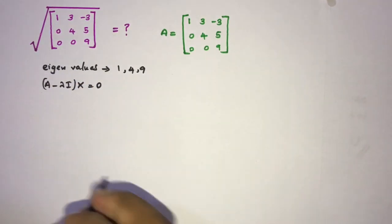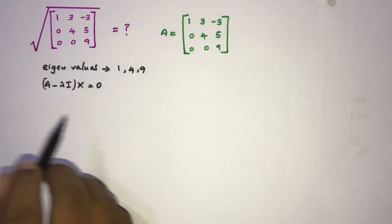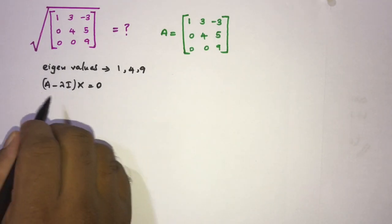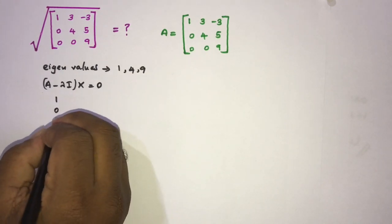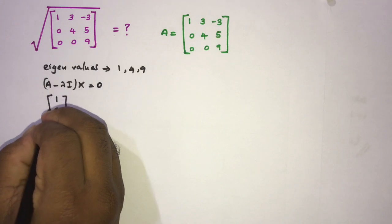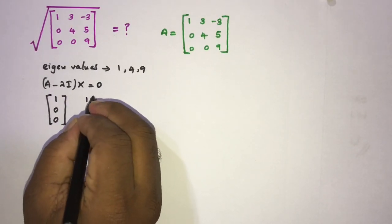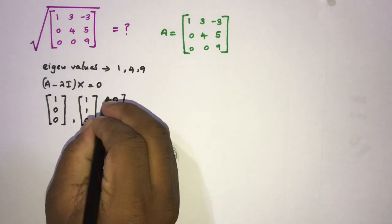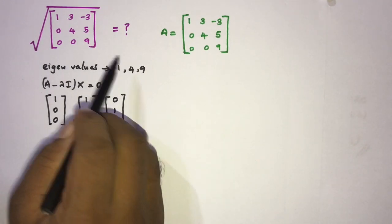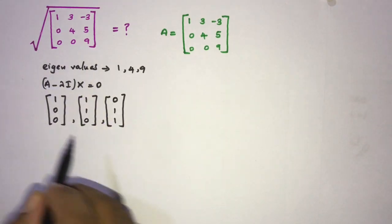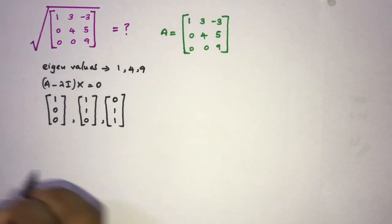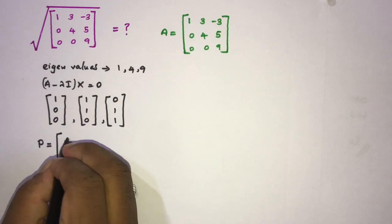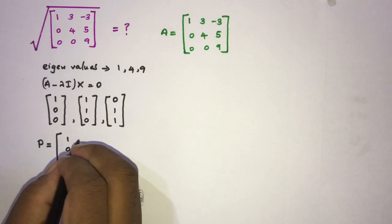We should find the eigenvectors using (A − λI)x = 0. I will skip this process because you can find them easily. The eigenvectors are [1, 0, 0], [1, 1, 0], and [0, 1, 1]. Now we can write the invertible matrix P, which is equal to [1, 0, 0 | 1, 1, 0 | 0, 1, 1].